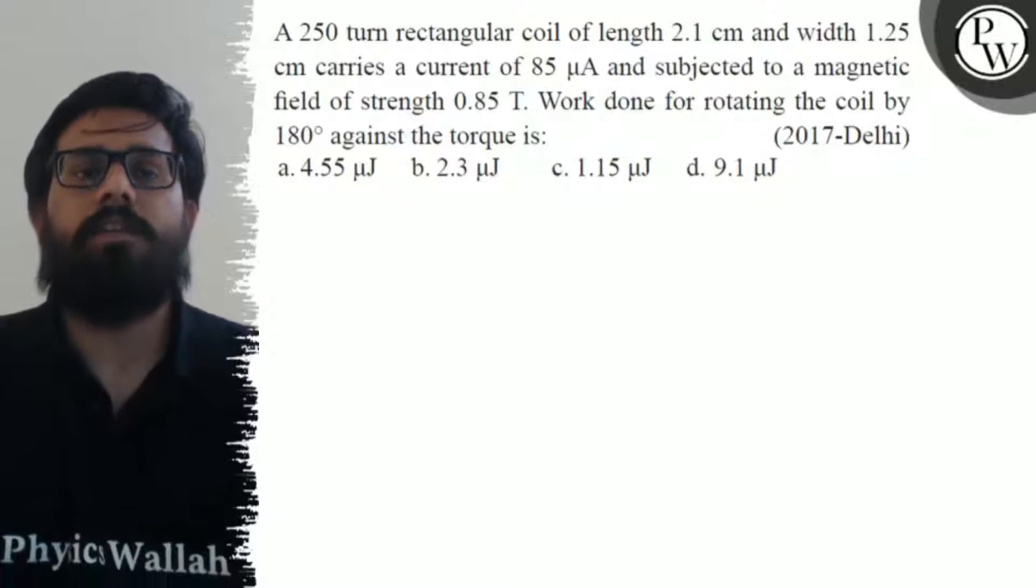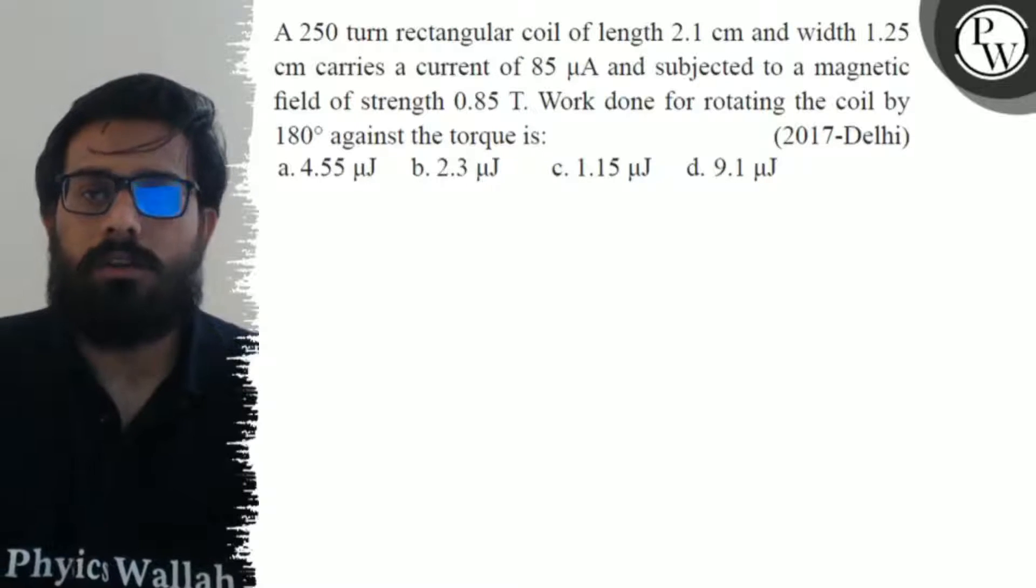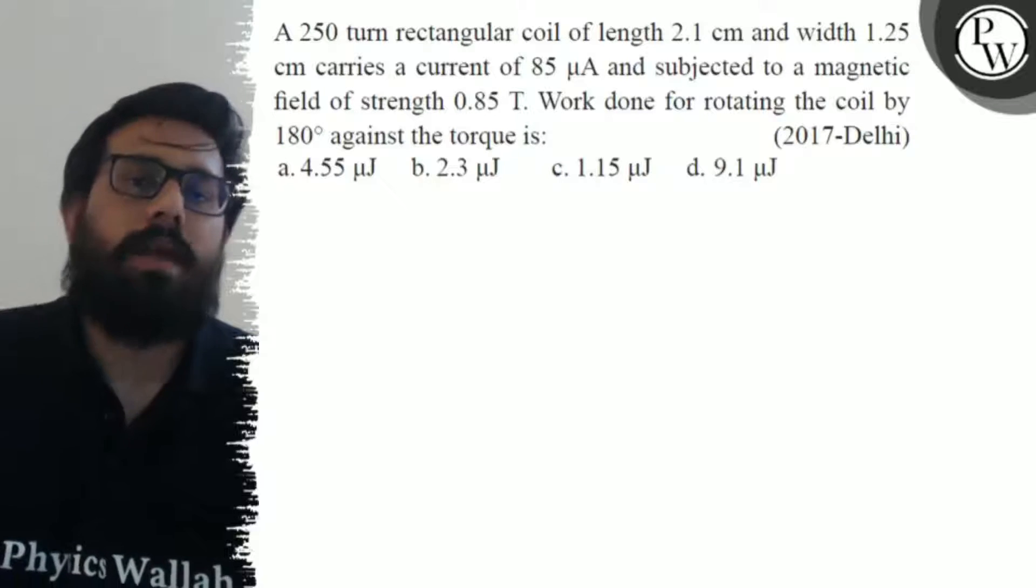Work done for rotating the coil by 180 degrees against the torque is: first option 4.55 microjoules, second option 2.3 microjoules, third option 1.15 microjoules, and fourth option 9.1 microjoules.